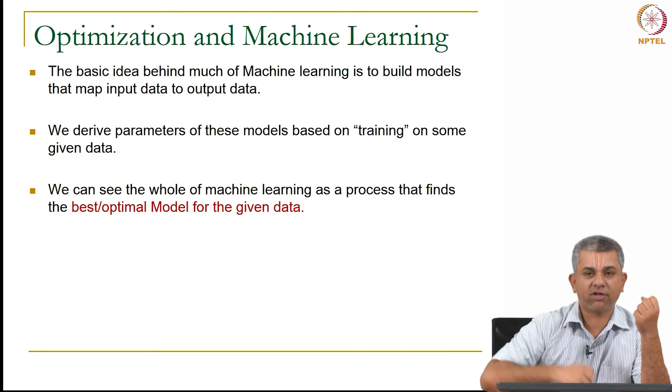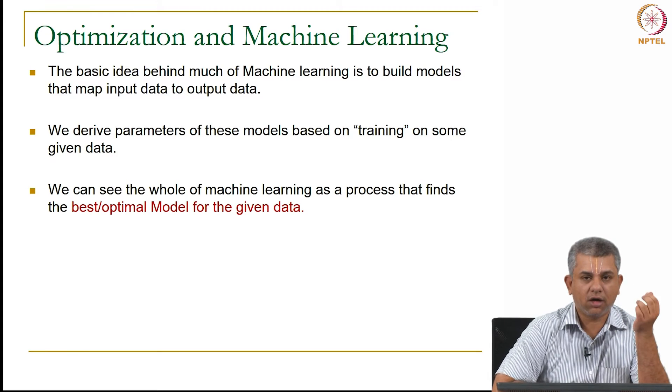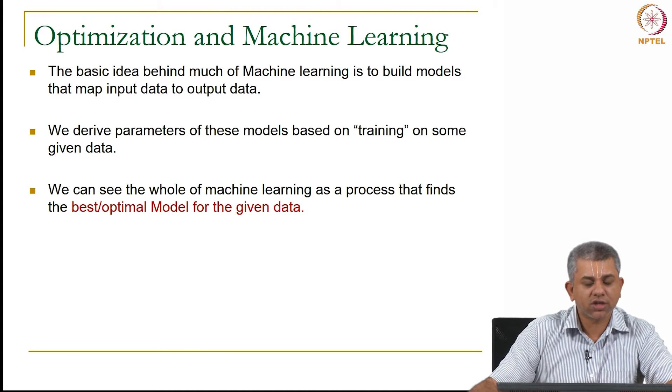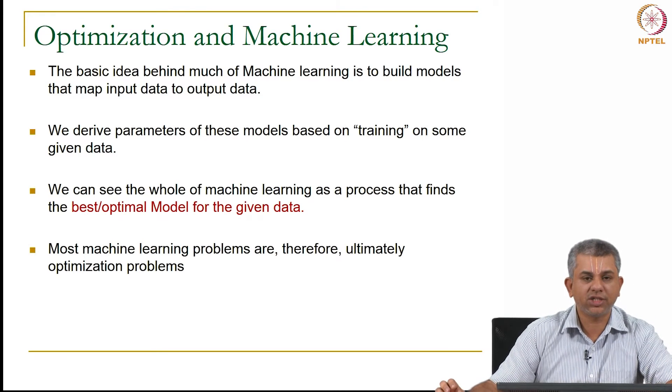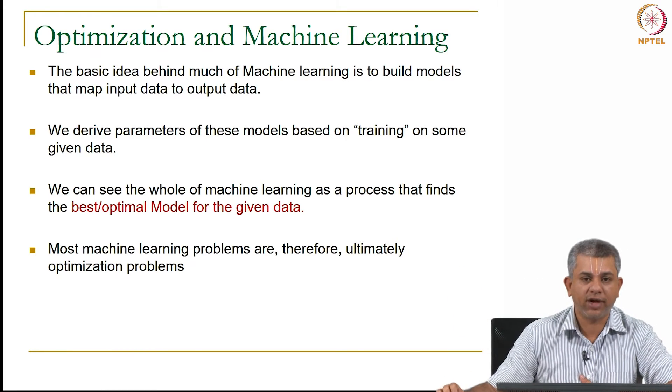So you have some quantity which is a vector quantity that is changing based on some other vector quantity. Most of our machine learning is dependent on finding out the best or optimal model for some given set of data.